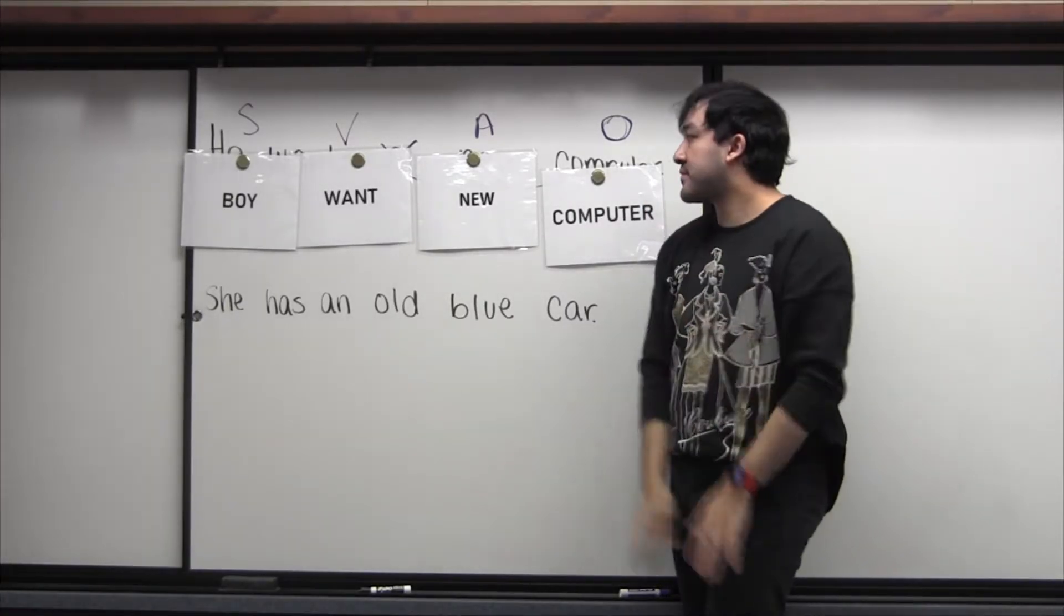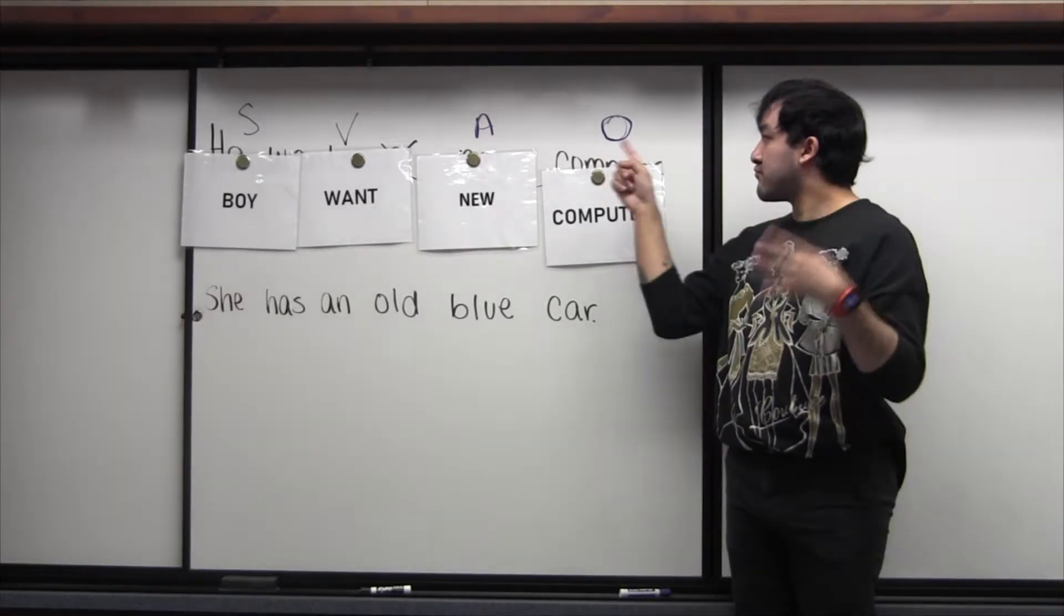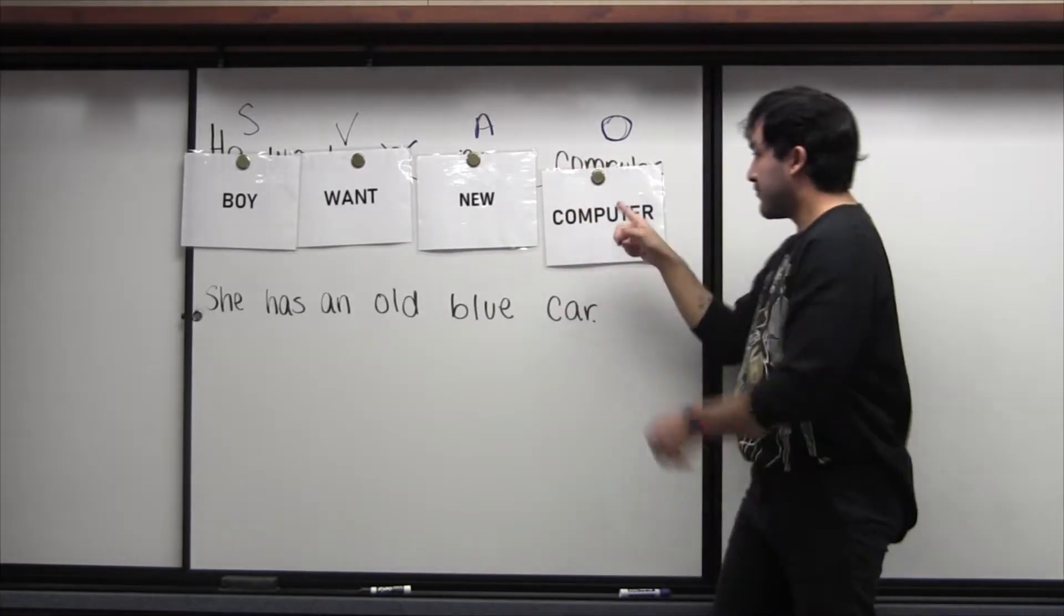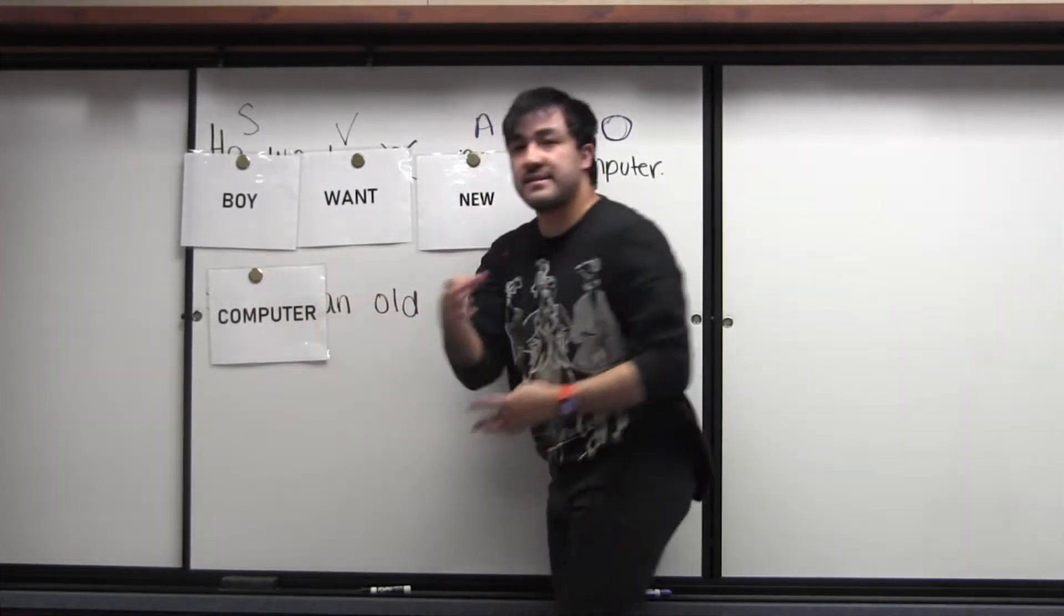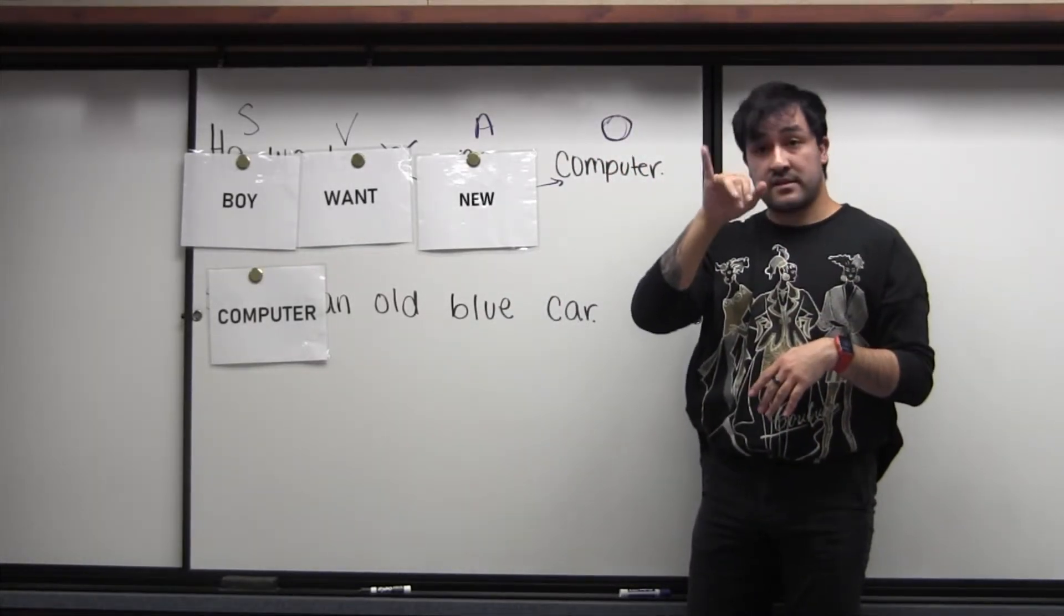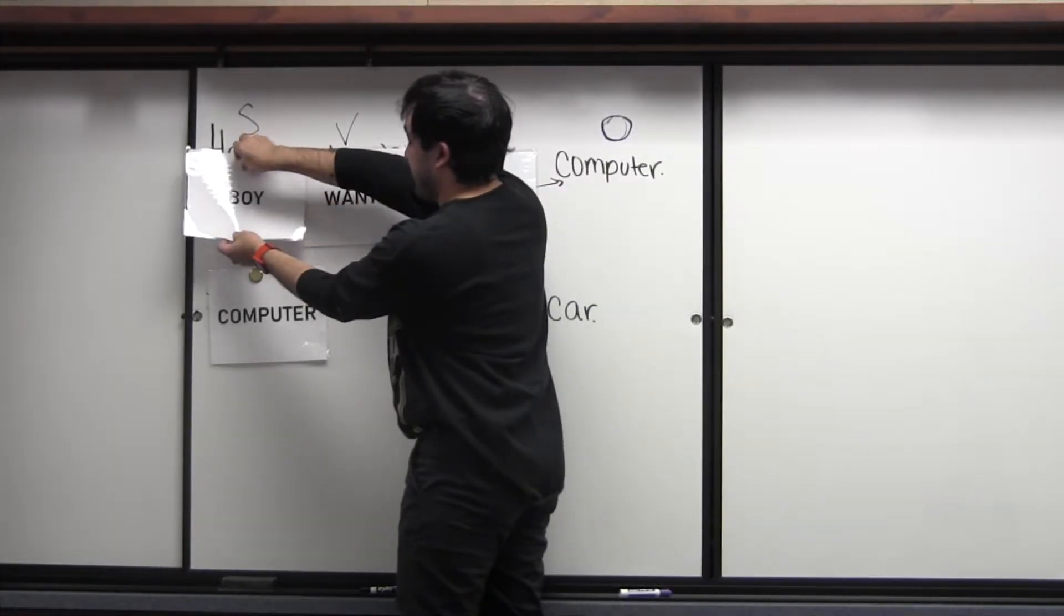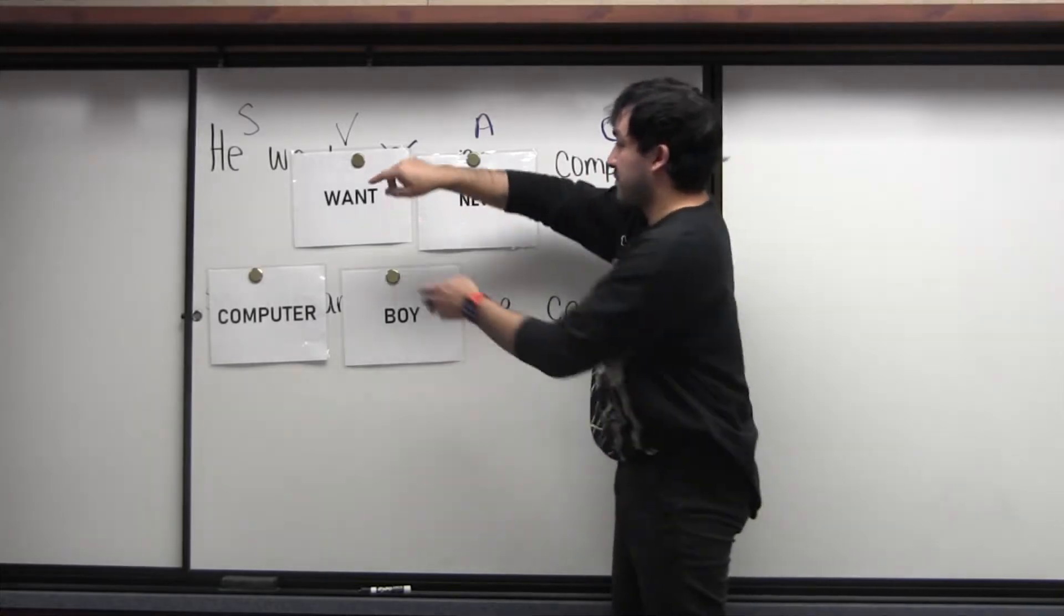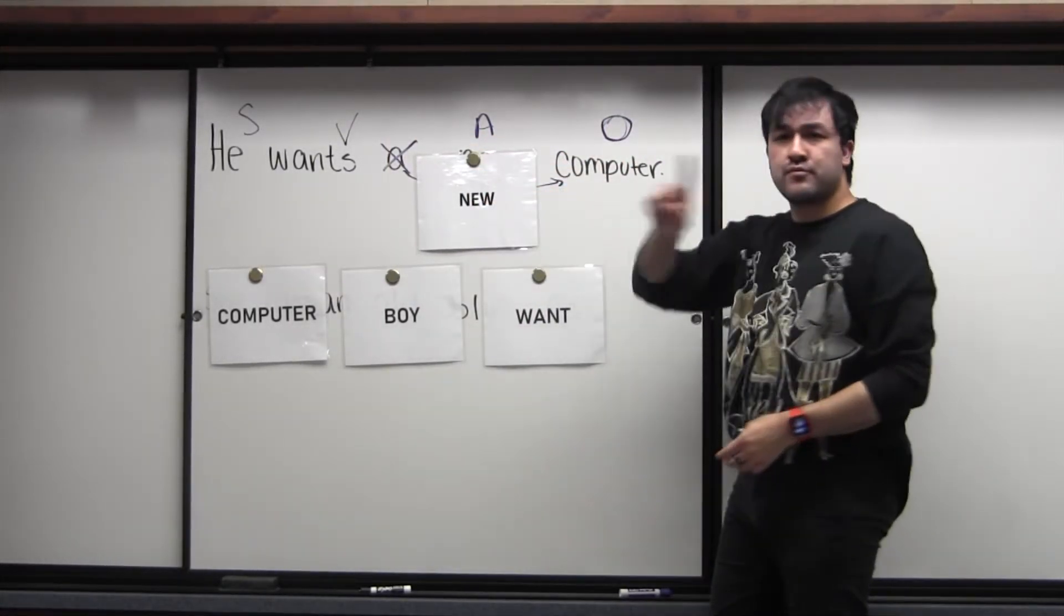So now, let's go ahead and put all of our words in order. So first is what in our sentence structure? I don't remember where it is on my fingers. It's object. Object, subject, verb. So let's go ahead and put our computer first. Next is our subject, which is boy. Then we have our verb, which is want.